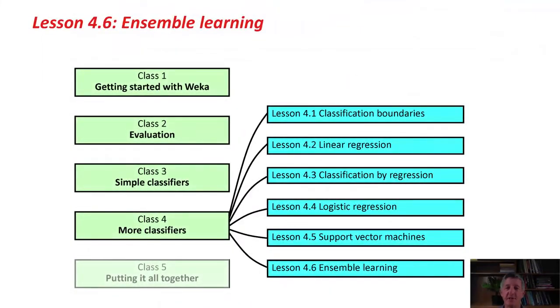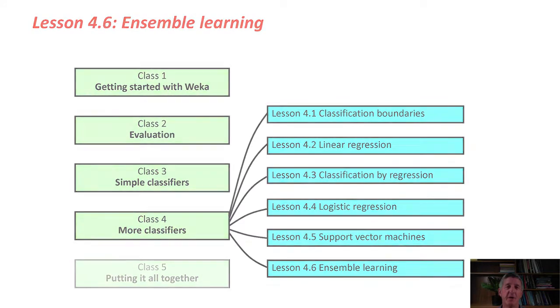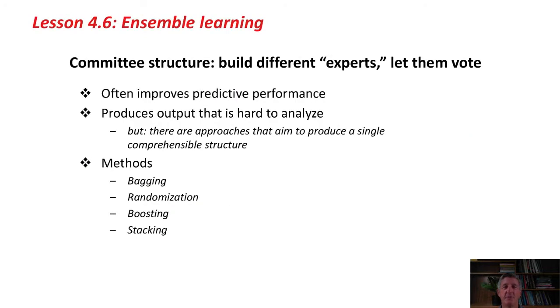Ensemble Learning. We're up to the last lesson in the fourth class, Lesson 4.6 on Ensemble Learning. In real life, when we have important decisions to make, we often choose to make them using a committee. Having different experts sitting down together with different perspectives on the problem, and letting them vote, is often a very effective and robust way of making good decisions.